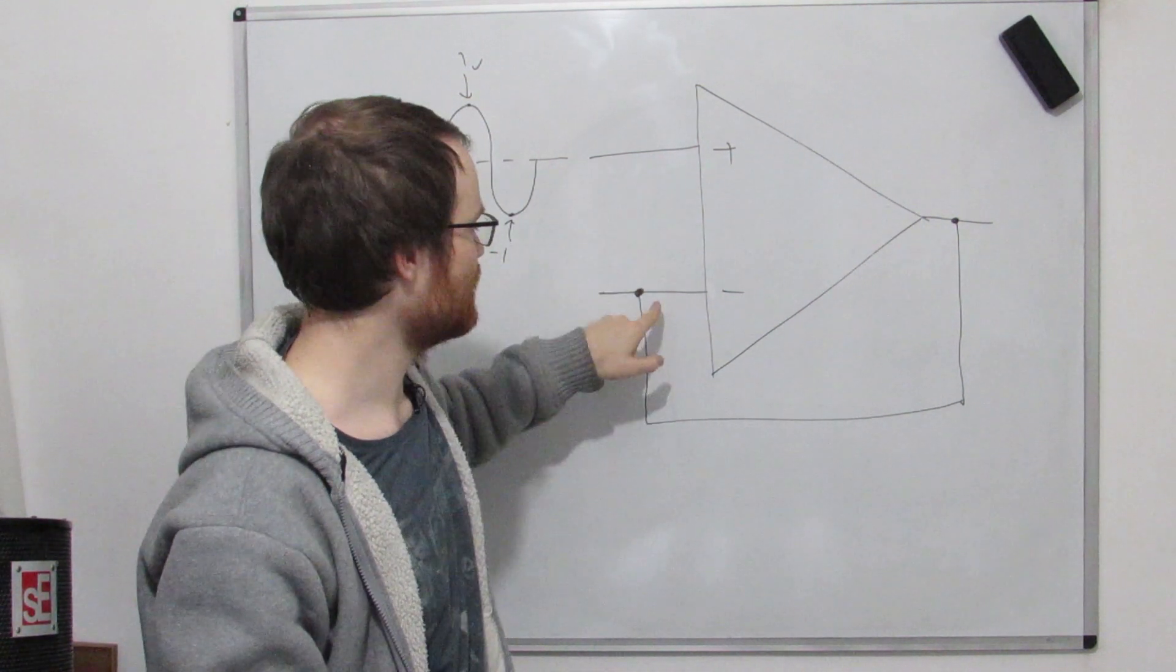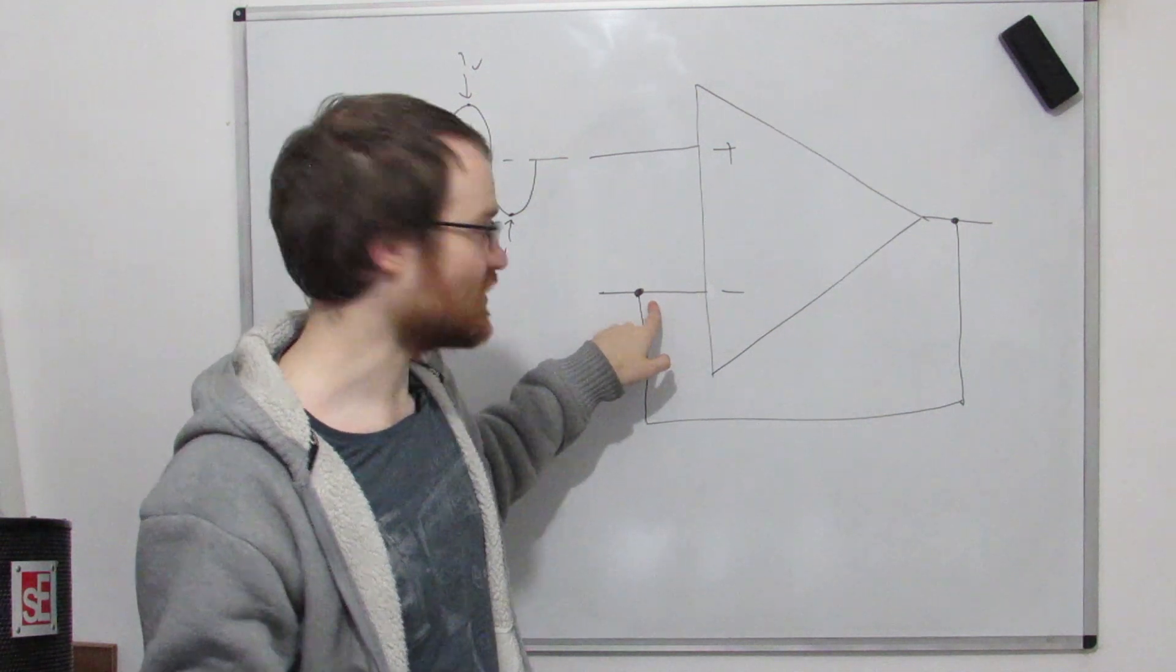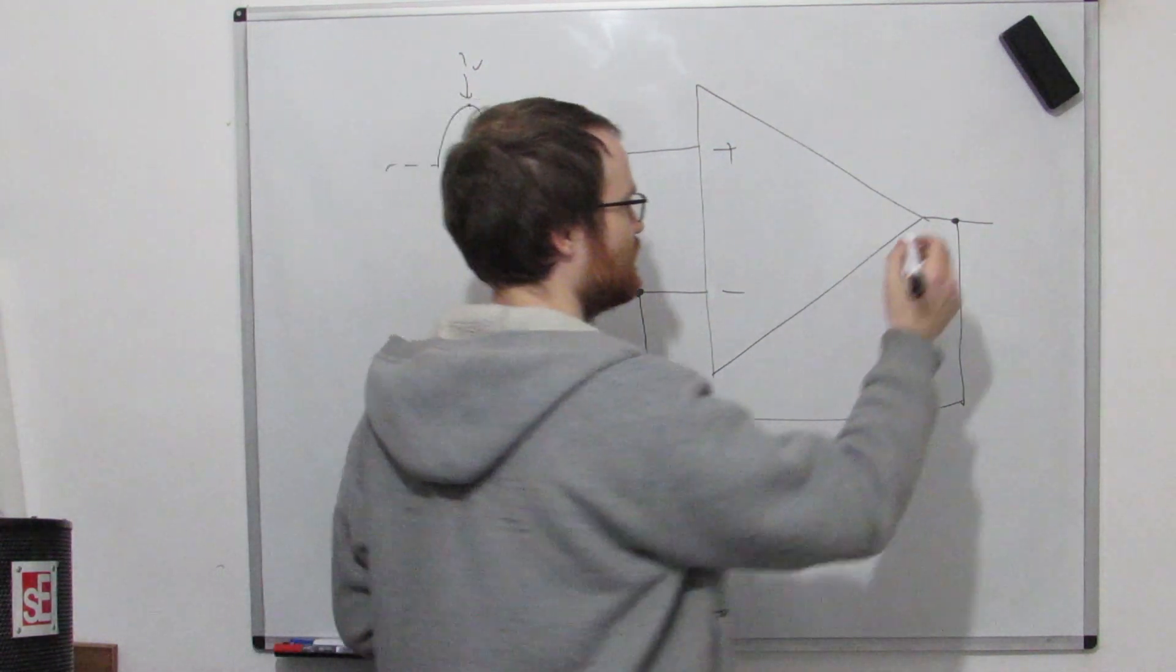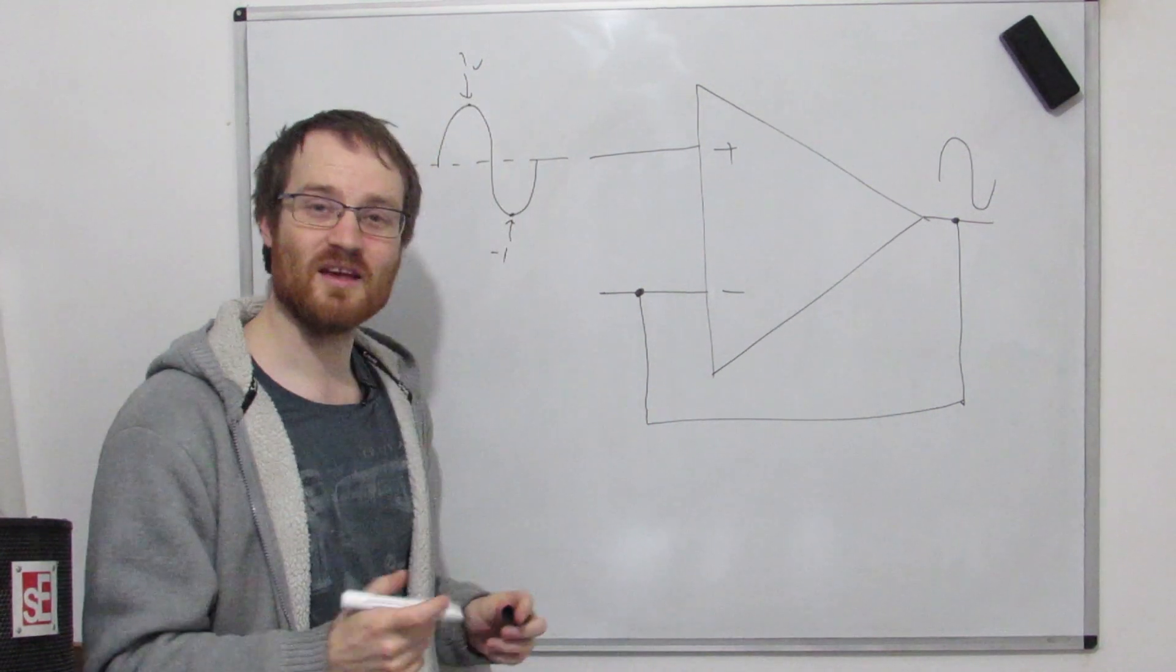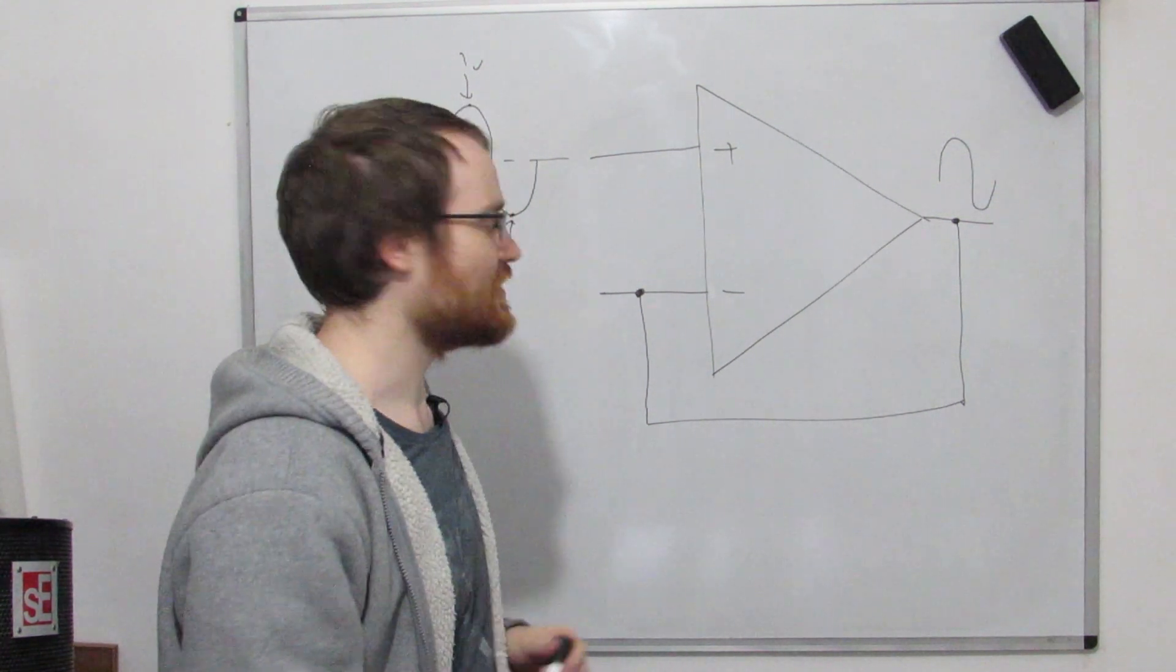If this is minus one volt here, what does this one want to be? It must be minus one volt. So very easy to see that the output just looks exactly the same as the input. Easy peasy.